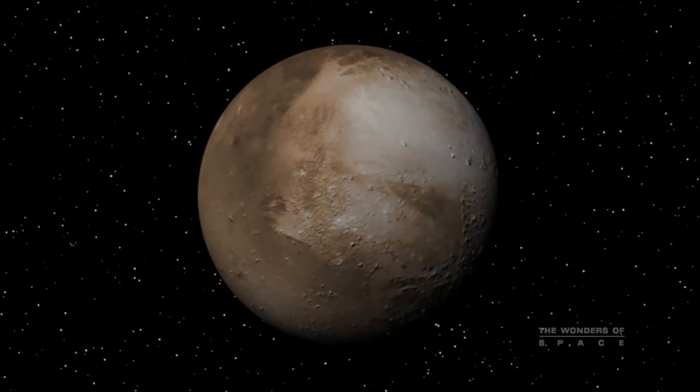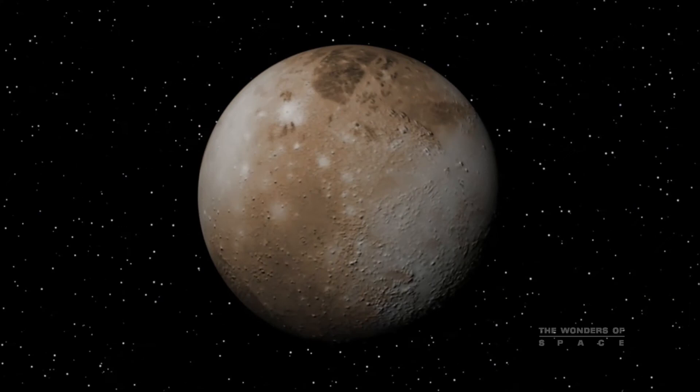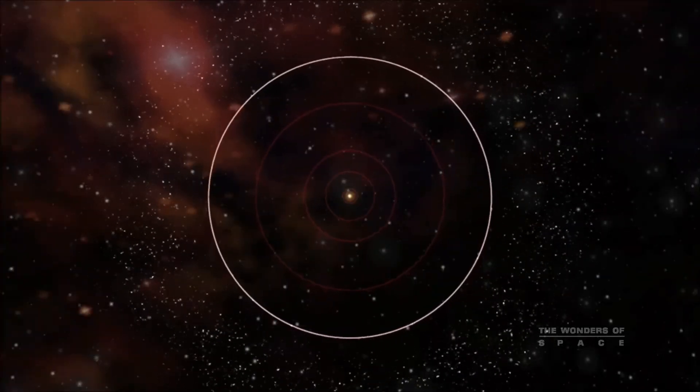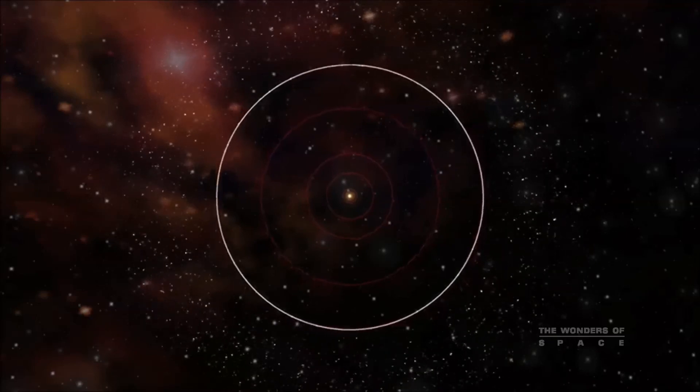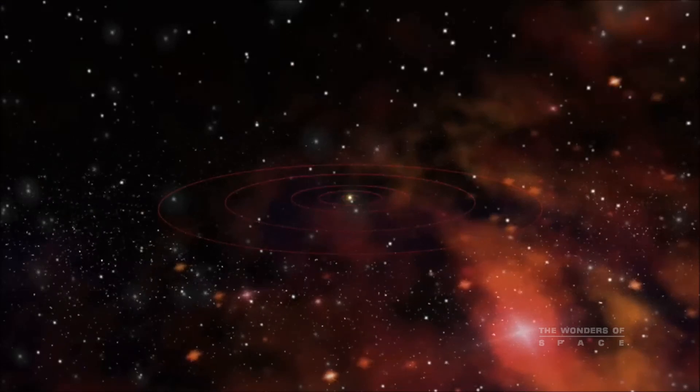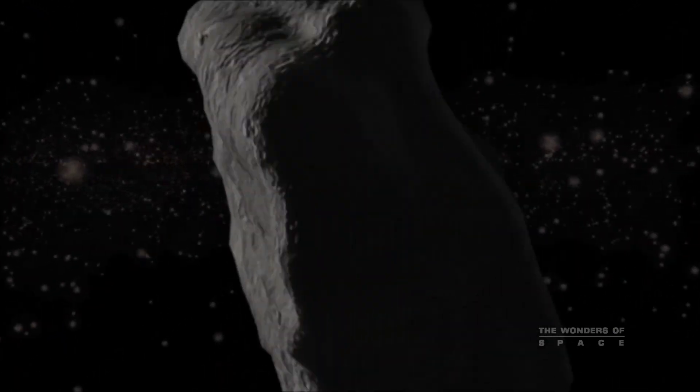Pluto is now deemed a dwarf planet, and a member of the Kuiper Belt. The Kuiper Belt is a region of the solar system that extends just beyond the orbit of Neptune, at about 2.8 billion miles out, to about 5 billion miles. Like the asteroid belt, it is crammed with many small bodies orbiting the Sun, most of which are frozen methane, ammonia, and water.